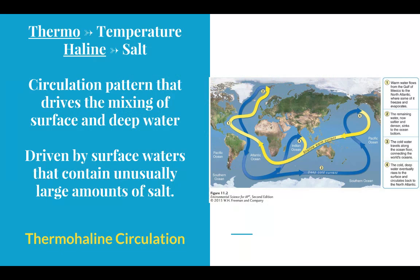Moving forward, we're going to look at thermohaline circulation. "Thermo" means temperature and "haline" — think of the mineral halite, which is a combination of sodium and chloride, i.e., salt. So this circulation is dependent on temperature and salt content, and this mixing of temperatures and different salt concentrations is going to drive surface and deep ocean waters.